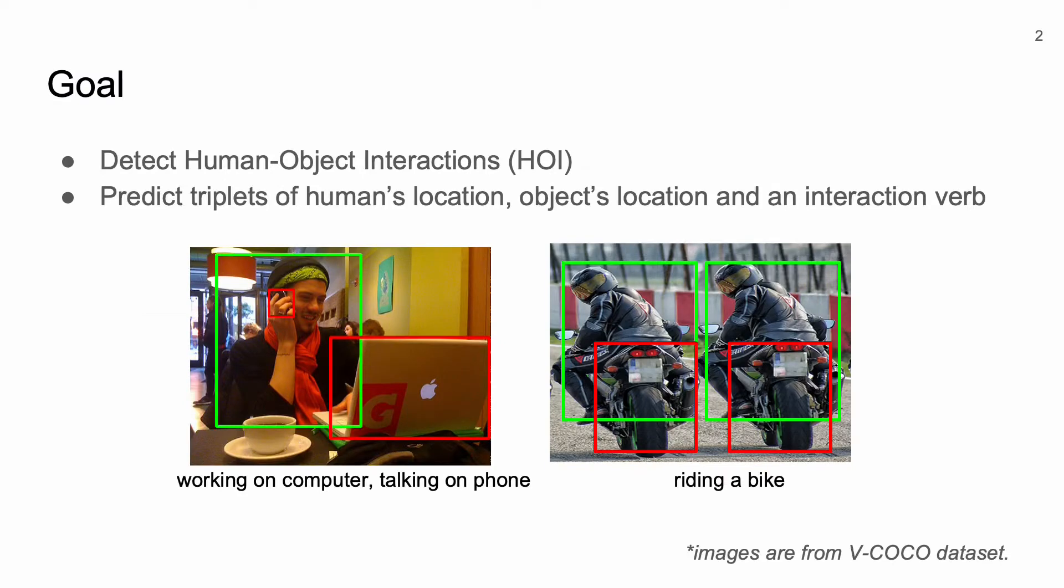Our goal in this work is to detect human-object interactions. This task is commonly known as HOI detection. Specifically, from input images, we want to predict human bounding box, object bounding box, and an interaction verb describing the interaction between them. In a single image, a person can interact with multiple objects, or there can be multiple different interacting human-object pairs.